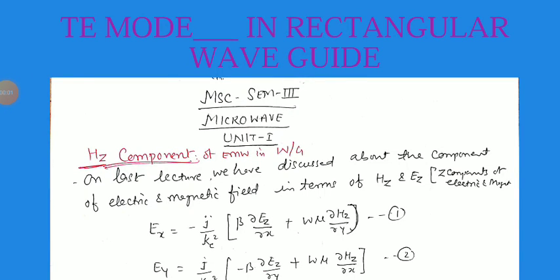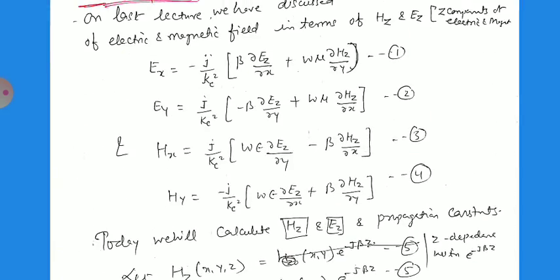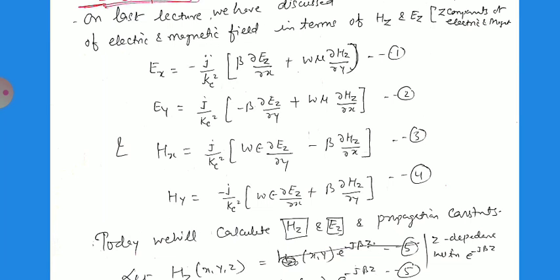Good morning to everybody. We are discussing the rectangular waveguide. In the last lecture we discussed the components of electric and magnetic fields in terms of Hz and Ez, that is the z-components of electric and magnetic fields. We found that Ex equals minus g over kc² multiplied by beta times ∂Ez/∂x plus mu·omega times ∂Hz/∂y. Similarly for Ey, Hx, and Hy we have calculated in detail.